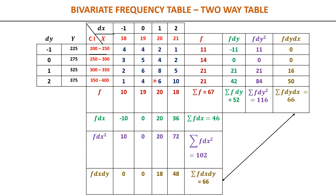Now look at the bivariate table. We have x as 18, 19, 20, 21 along the rows. Taking midpoints of the class intervals, dy = (y − 275) / 50 gives values −1, 0, 1, 2. With dx = x − 19, we get dx values −1, 0, 1, 2. All the frequency values given in the problem are entered into the corresponding cells of this two-way table.